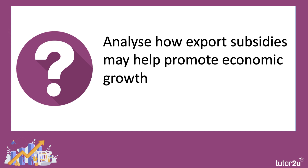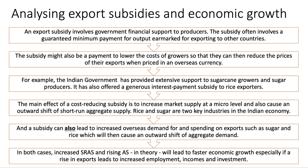I'll give you an example of building an analytical chain of reasoning to get those marks. So an export subsidy involves government financial support to producers — some kind of financial underpinning to producers, could be a farmer for example. The subsidy often involves a guaranteed minimum payment for output, specifically output earmarked for exporting to other countries. The subsidy might also be a payment to lower the costs of growers so that they can then reduce the prices of their export when priced in an overseas currency. So a subsidy can take many different forms but essentially it's a cost-reducing government support.